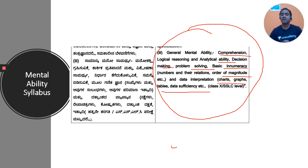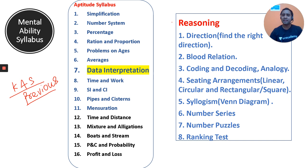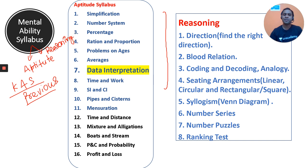I have analyzed the previous KPSC examination papers, listed down the topics with their importance, and divided mental ability into two parts: aptitude and reasoning. Your 30 questions and 60 marks will be distributed across all these topics. Let's discuss them one by one.